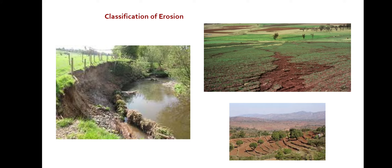The primary agents of erosion are water and wind, and erosion is classified into water erosion and wind erosion. In India, the total geographical area is 326 million hectares, of which the eroded area is 81 million hectares.